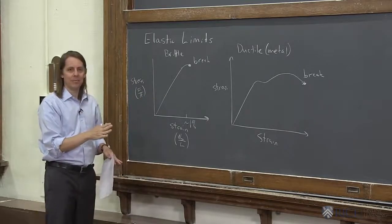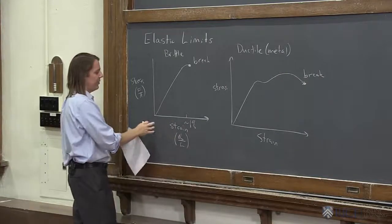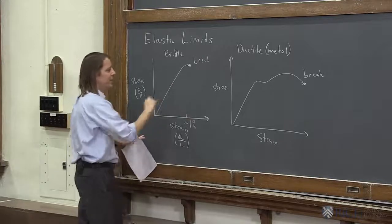Proportional means it's a line. So the fact that this is straight just means that the elastic modulus doesn't depend on the strain or the stress. It's a constant value, and this makes a line.